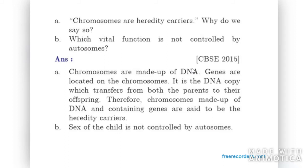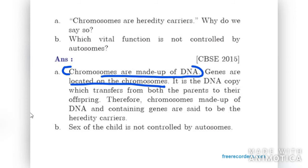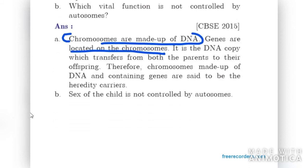Chromosomes are hereditary carriers — why do we say so? Chromosomes are made up of DNA, and genes are located on chromosomes. The DNA copy transfers from both parents to their offspring; therefore, chromosomes containing DNA and genes are said to be hereditary carriers. You must write about chromosomes, DNA, and genes in such questions. For the second part: the sex of a child is not controlled by autosomes — it is only controlled by sex chromosomes.